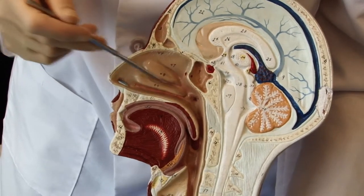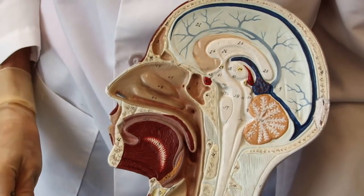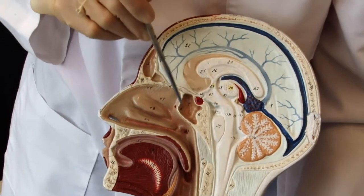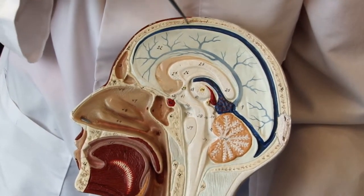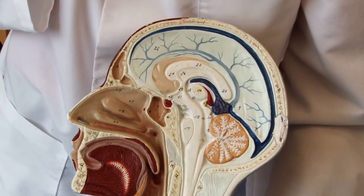Similarly, the nasal mucosa is also supplied by the trigeminal nerve, as are the linings of the sinuses and most of the dura matter that covers the surface of the brain.